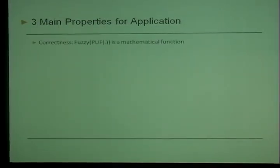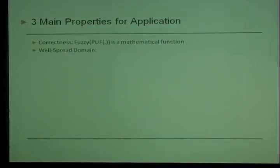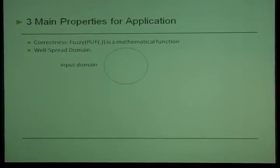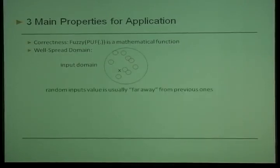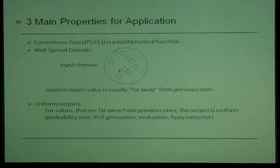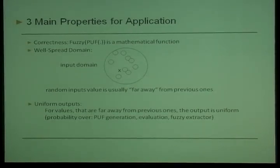The three main properties we need from PUF plus fuzzy extractor are: first, correctness — the combination gives you an actual function; second, the well-spread domain property — that is why the domain needs to be large, so that a random challenge drawn after measuring the PUF a few times is usually far from all previously measured inputs; and third, in that case the output is uniform, meaning you know nothing about the output.